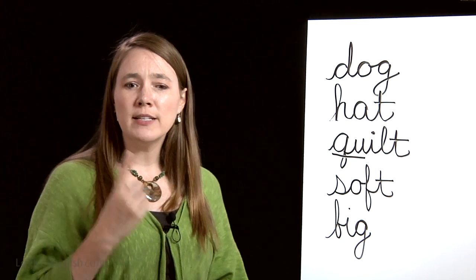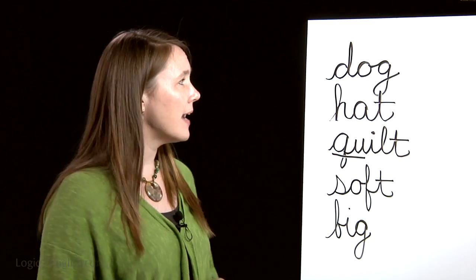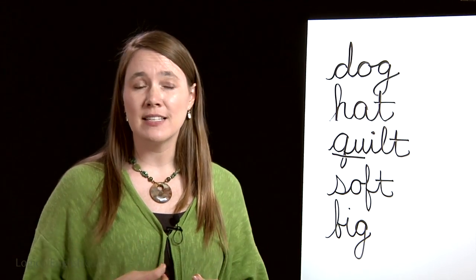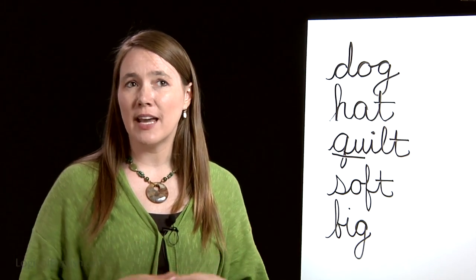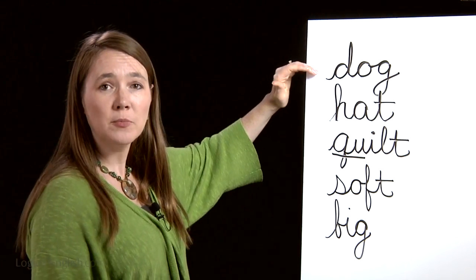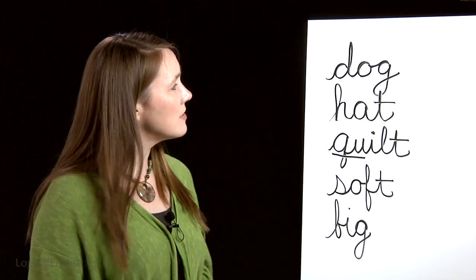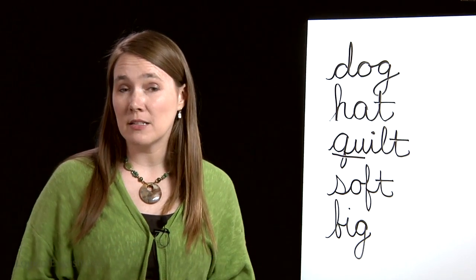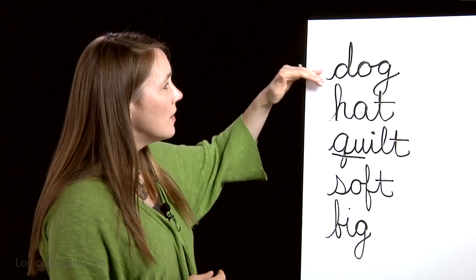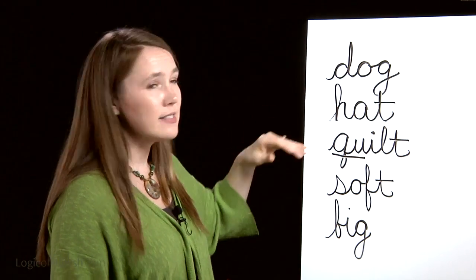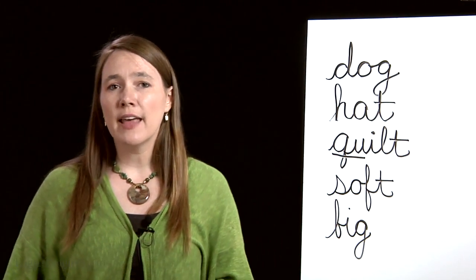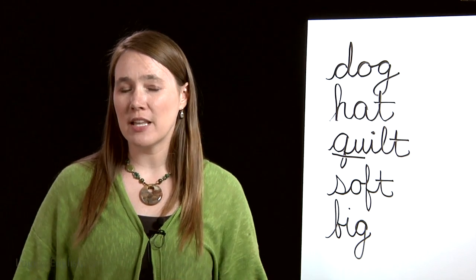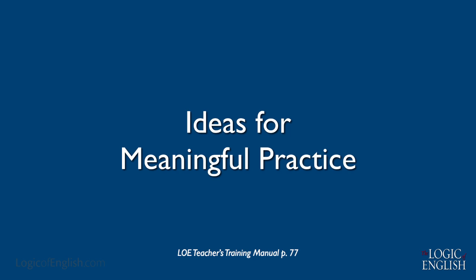We could also teach students about plurals. We could say: I have one dog, but what if I have two? I say 'dogs.' What do you hear at the end? You hear an S sound — that's called a plural. To make a noun plural, just add the ending S unless the word hisses or changes. None of these words hiss or change, so we can make them plural: dogs, hats, quilts. You can see that once you learn some words, you can begin to use them in meaningful ways. There are a number of ideas on page 77 of the teacher's training manual that I think you'll find helpful for enhancing your teaching.